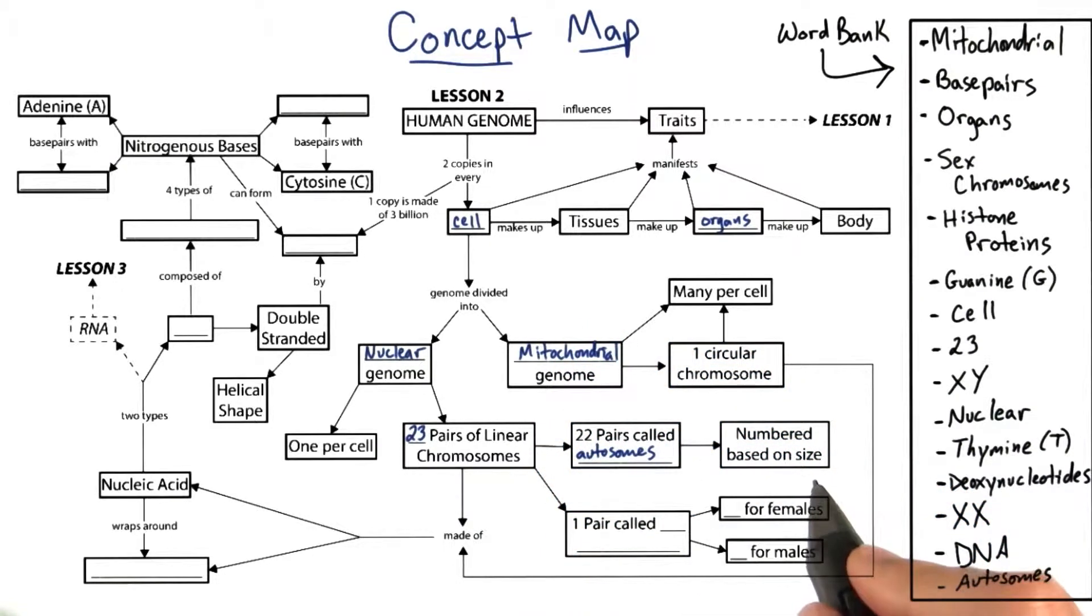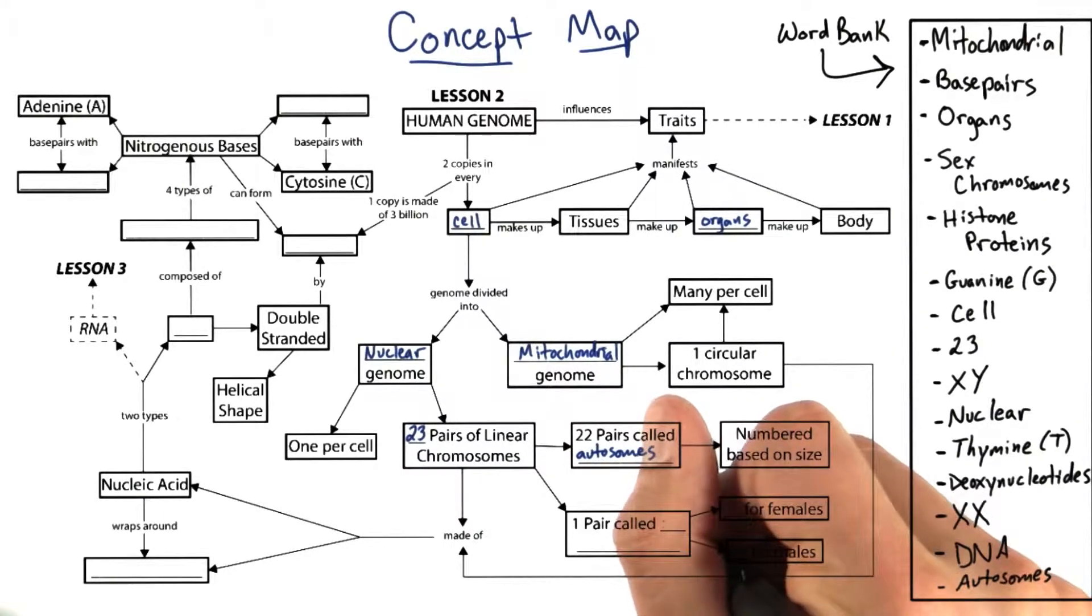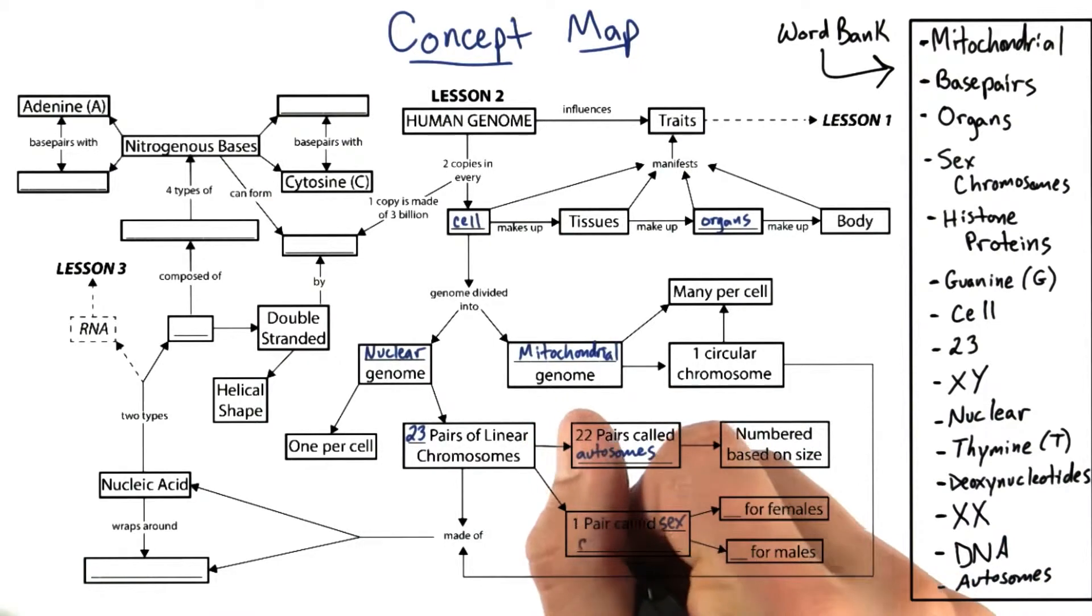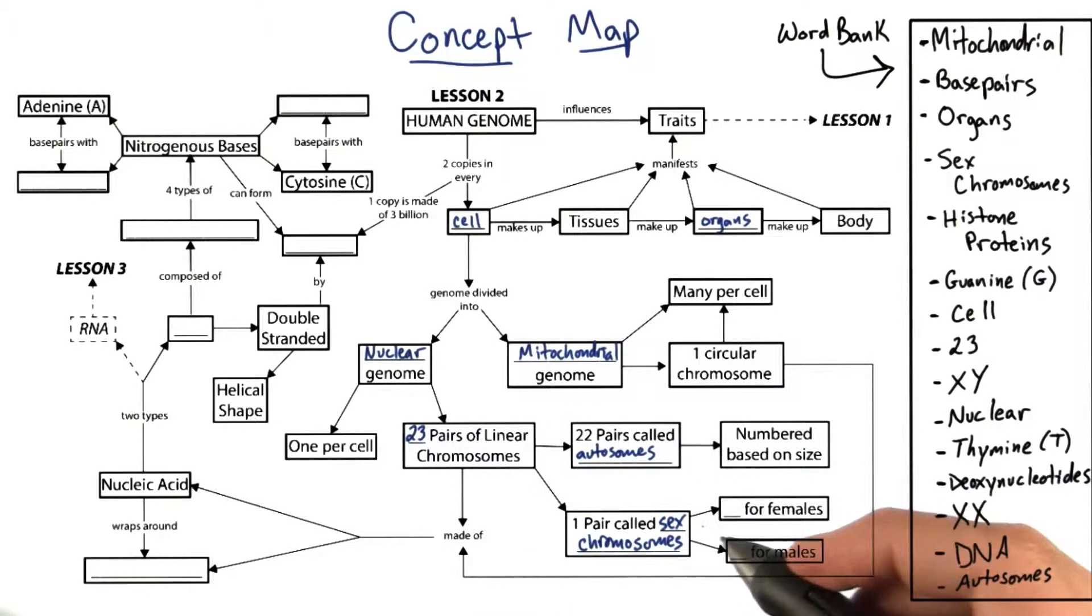They're numbered based on their size from one to 22, one being the biggest and 22 being the smallest. But one pair of the 23 pairs of chromosomes are called sex chromosomes, and these determine the sex of the individual.